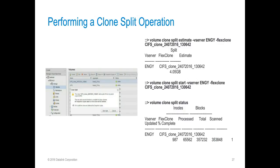In the first instance, we've determined that we need to keep the clone for our development team. From System Manager, we highlight the clone volume and select the split option from the clone drop-down. Acknowledge this command and select Start Split. On the right-hand side of the screen, we can see the CLI commands for the same option. We're going to run the volume clone split estimate command. This will give you an idea of how much extra space this clone split operation will take in your aggregate prior to executing the clone split. Once we've done that, we can use the clone split start to kick off the process, and then monitor it with the volume clone split status command.